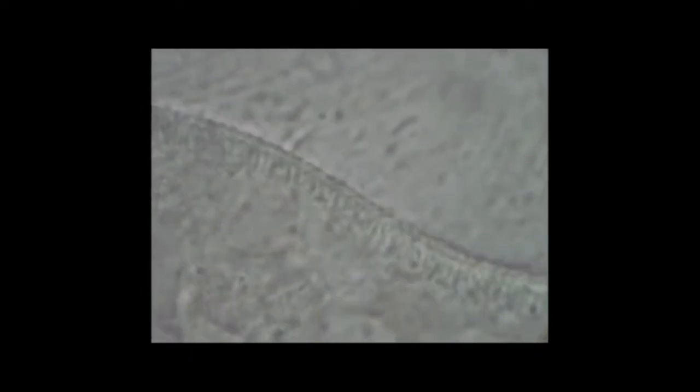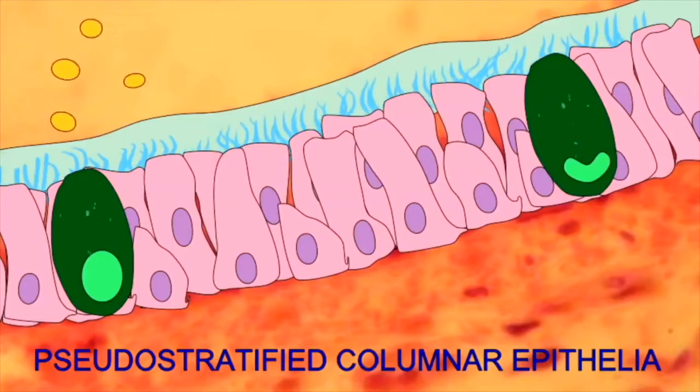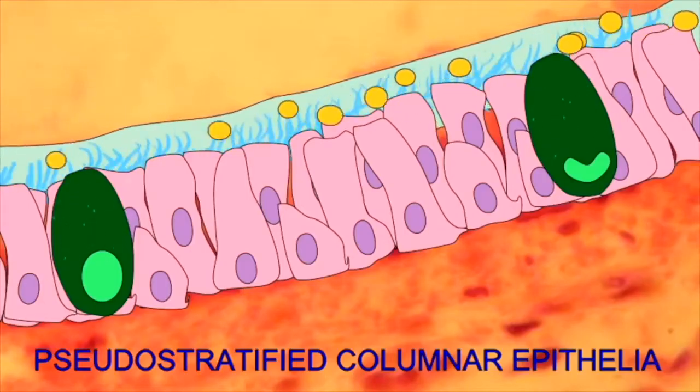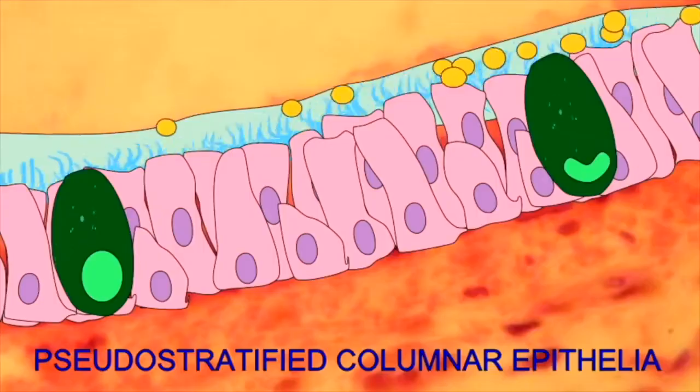While all three types of flagella are used for locomotion, they are structured very differently from each other. Other cells have different means of locomotion. Cilia are similar to flagella in structure and function, but a cilium is shorter and moves differently.